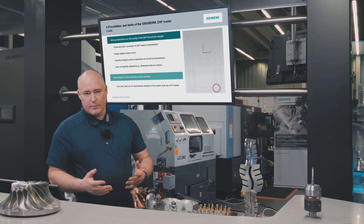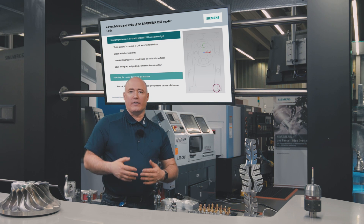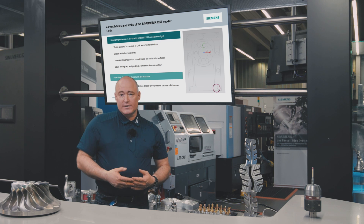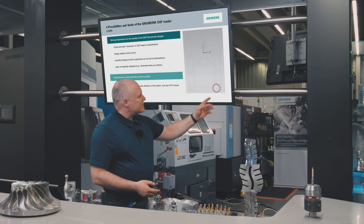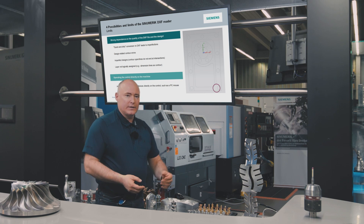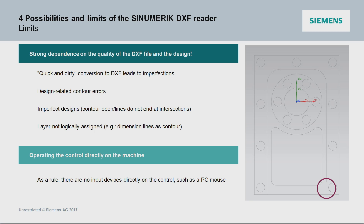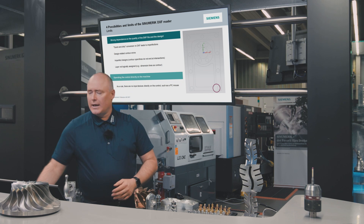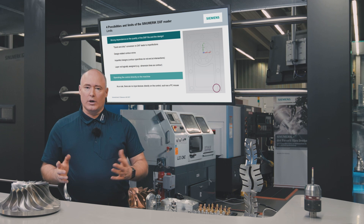Now that we have shown you the possibilities offered by using the DXF reader with the Cinemerix, here are a few more words on the aspects that need to be considered. We depend greatly on the quality of the DXF data, which is dependent on the design. What can happen with a messy design is you have design errors — lines that do not connect properly with the edges. We can easily solve this by repairing those affected elements and closing the gaps. This is an advantage of using the Cinemerix with the DXF reader, where you have the interface and controls directly on the machine. With this setup, it makes sense to plug in an input device like a mouse so that you can navigate properly.